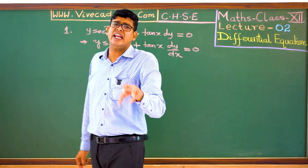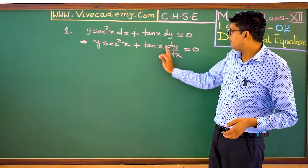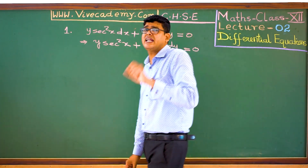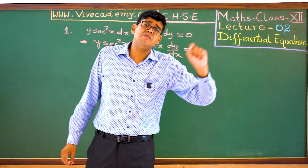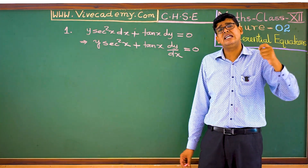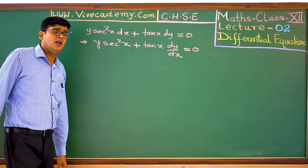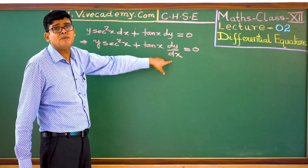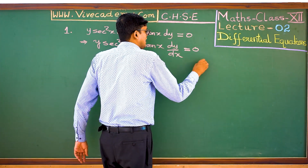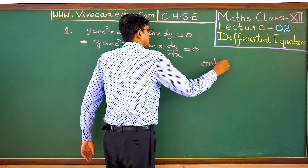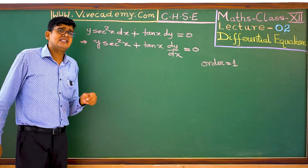Ultimately, this equation has dy/dx. So we have dy/dx — this is the order. The order is the maximum derivative. This differential equation has order 1. Next, we have the degree.